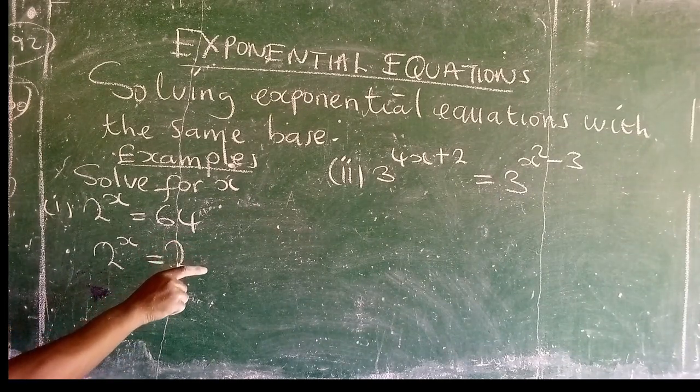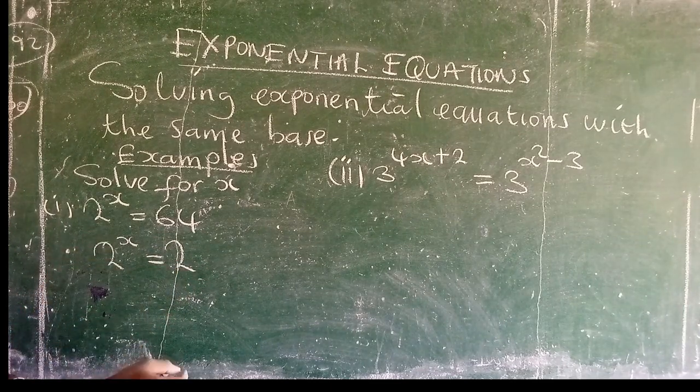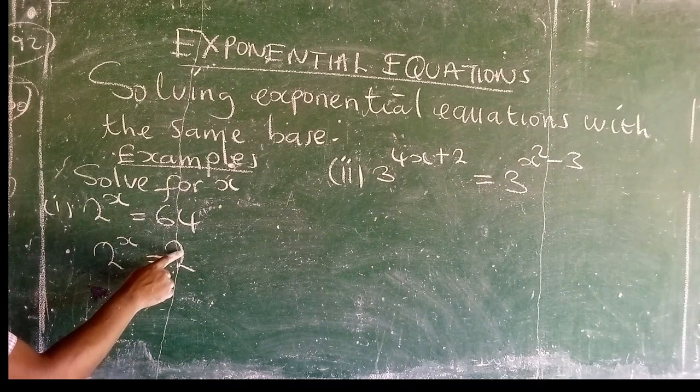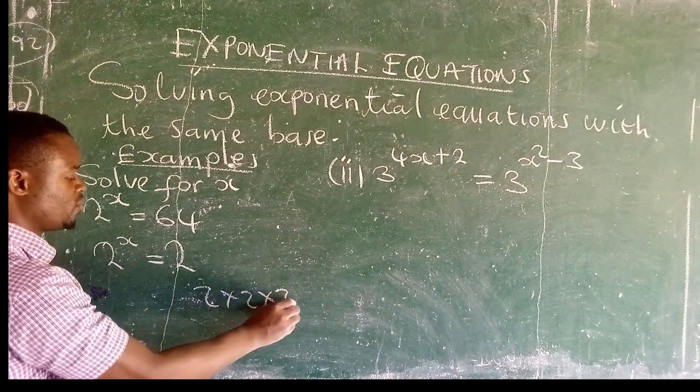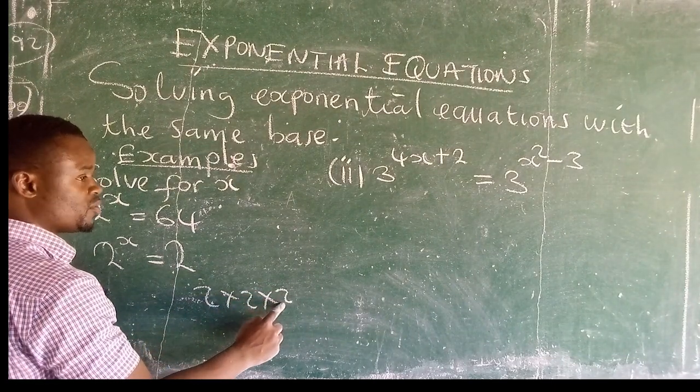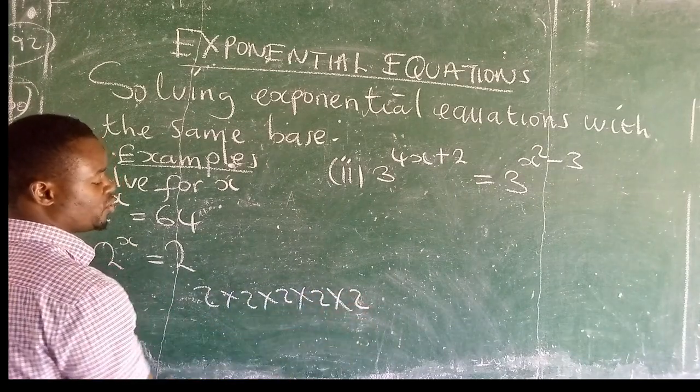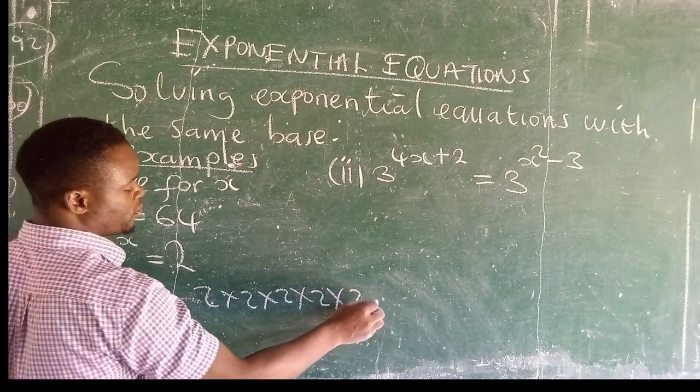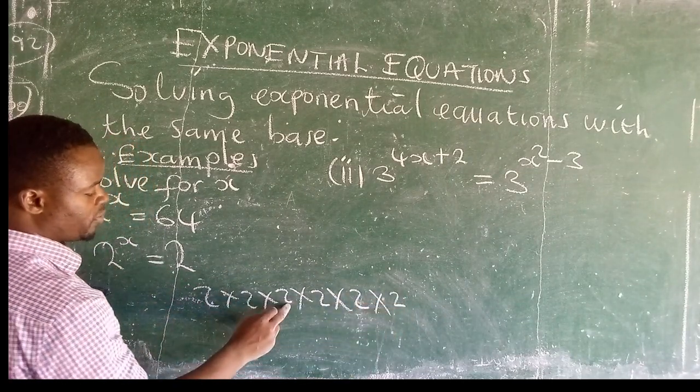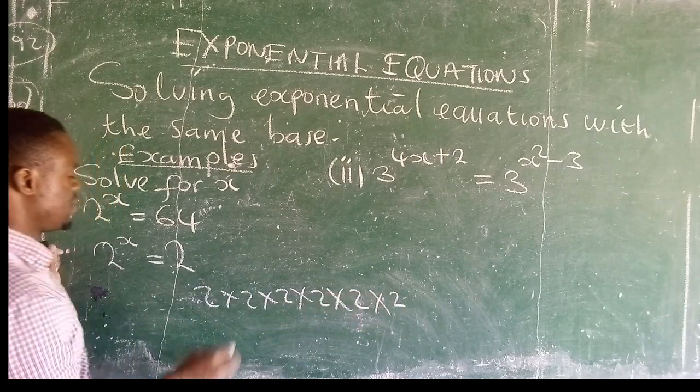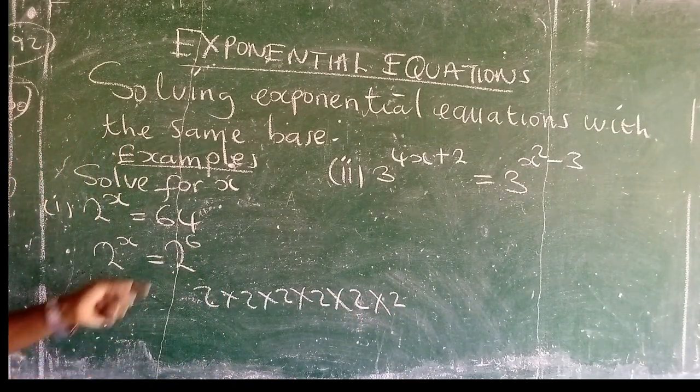Now the question is, to what exponent should we raise a 2 so that we have 64? So we have to say 2 times 2 times 2, 2 times 2, 4 times 2, 8, times 2, 16, times 2, that is 32, times 2, 64. So 2 has to be raised to the power of 6 for us to get 64.